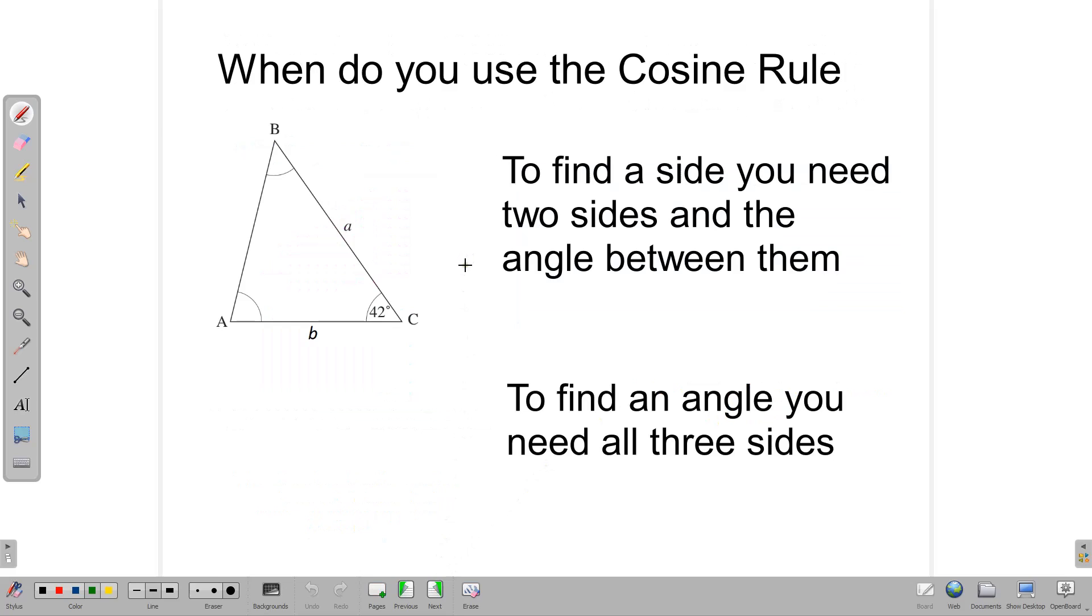When do we use the cosine rule? In order to use the cosine rule, we need two sides and an angle between them. For example, if we wanted to find a side, we need the other two sides and we want the angle between them looking exactly like this.